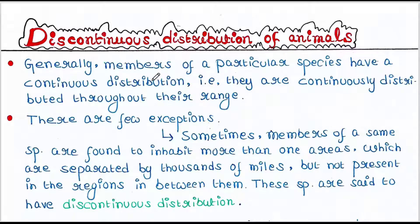Generally, members of a particular species have a continuous distribution. That is, they are continuously distributed throughout their range. For example, we can talk about our species sapiens — you can find humans all over the world. This is called continuous distribution.